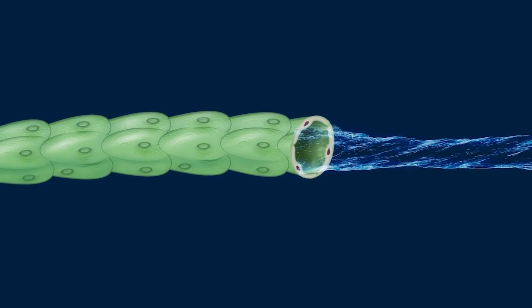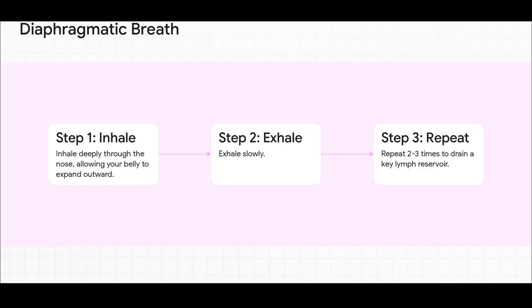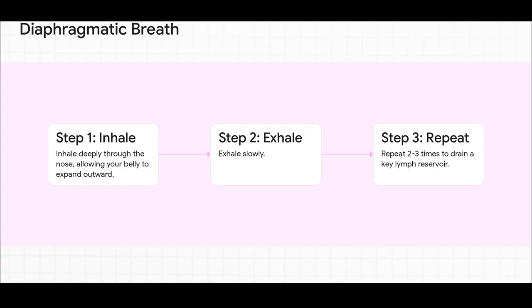But you know what? There's an even simpler way to get things moving, and you can do it right now. Just taking a few deep belly breaths, the kind where your stomach expands when you inhale, creates a pressure change in your torso. This acts like a little vacuum, sucking lymph from a major collection tank right back into circulation. It's a super powerful zero-effort pump you can use anytime, anywhere.